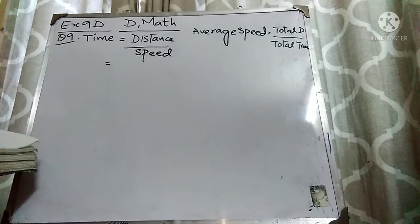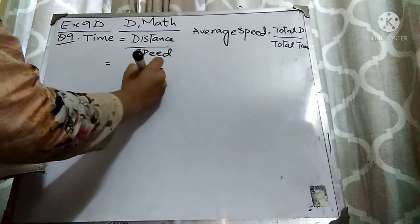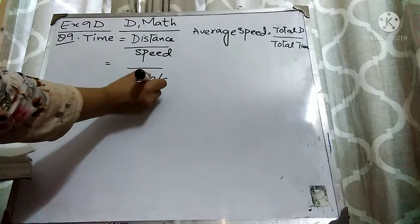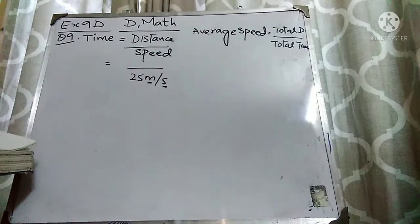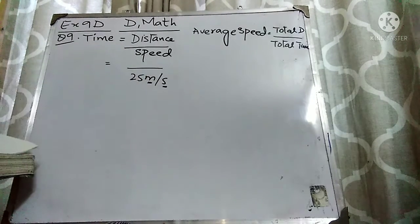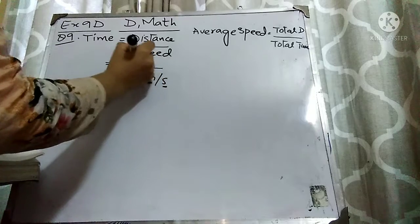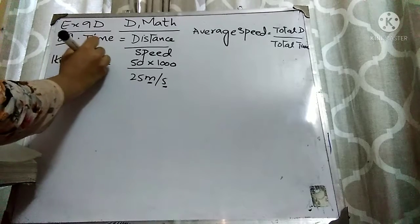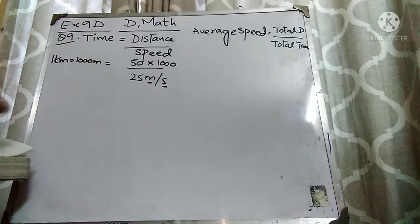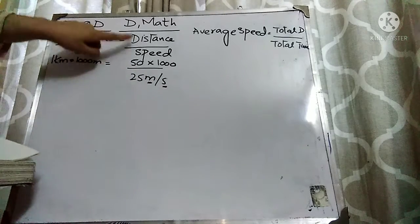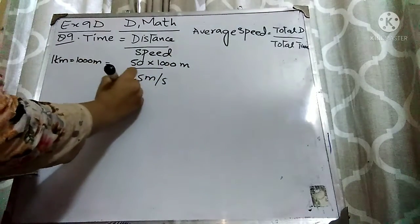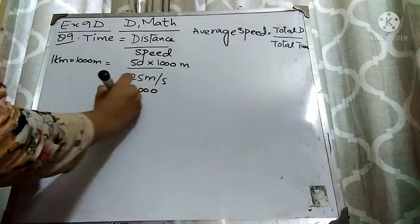Here the speed is given as 25 meters per second. Speed is distance divided by time, which means distance is in meters and time is in seconds. So we also need the distance in meters, but here the distance is given in kilometers. To convert kilometers into meters, I will multiply by 1000. You know that 1 kilometer equals 1000 meters. So to convert 50 kilometers, multiply 50 with 1000. We get 50,000 divided by 25.